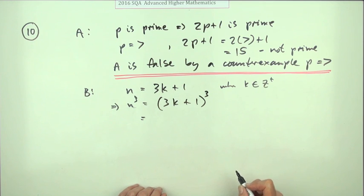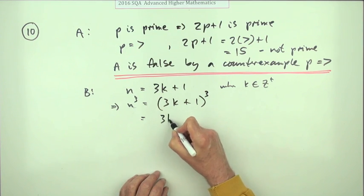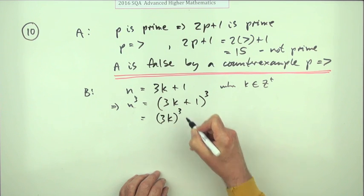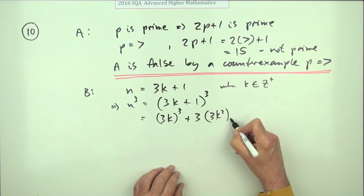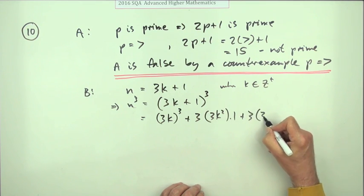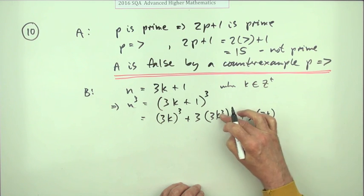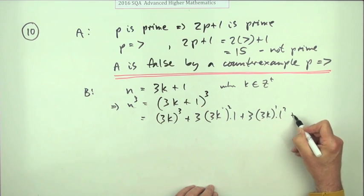I could just multiply that out with the binomial - the coefficients 1, 3, 3, 1. So that would be 3k cubed times 1 to the power of 0, plus 3 lots of 3k squared times 1 to the power of 1, plus 3 times 3k to the power of 1 times 1 squared, plus finally just 1 cubed.